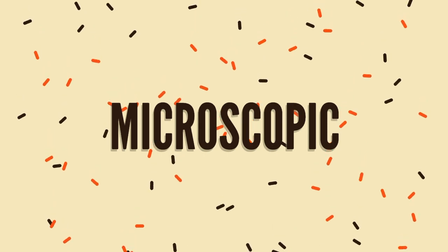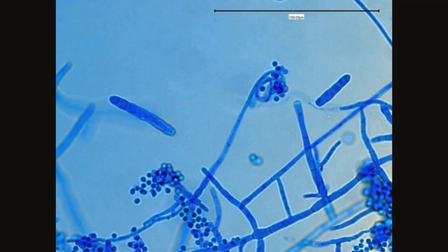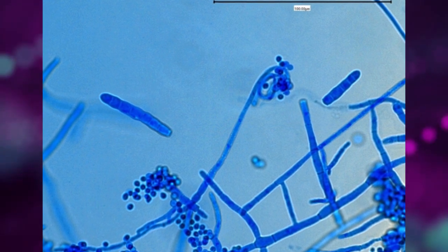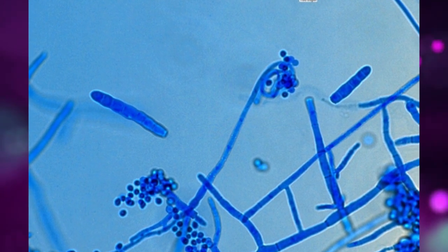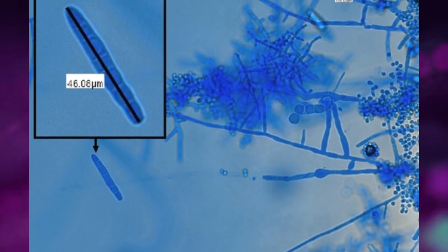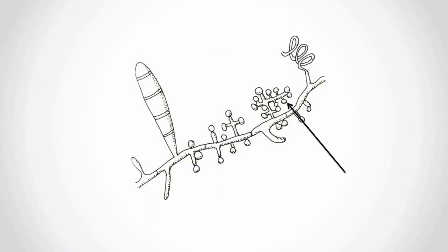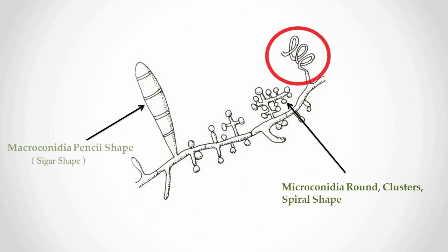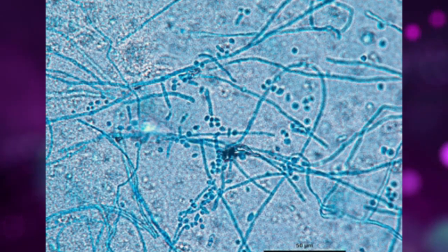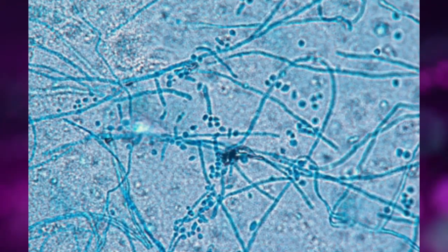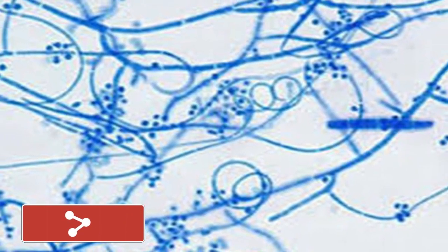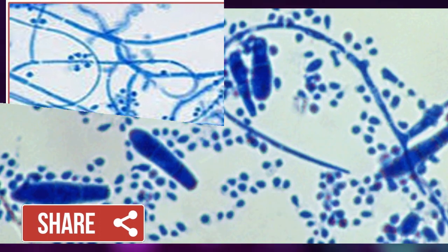Microscopic Characteristics: Hyphae are septate and hyaline. Macroconidia are sometimes present but not always; they are cigar- or pencil-shaped. The microconidia are round and clustered on branched conidiophores. Coiled spiral hyphae are often seen and they are pathognomonic. Thin-walled, with narrow attachment to hyphae, they contain 1–6 cells and are more readily found in young cultures, 5–10 days old.